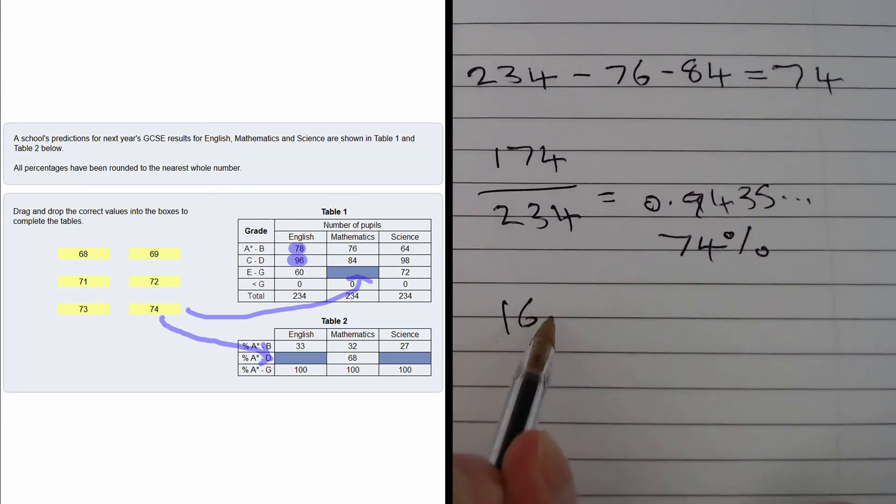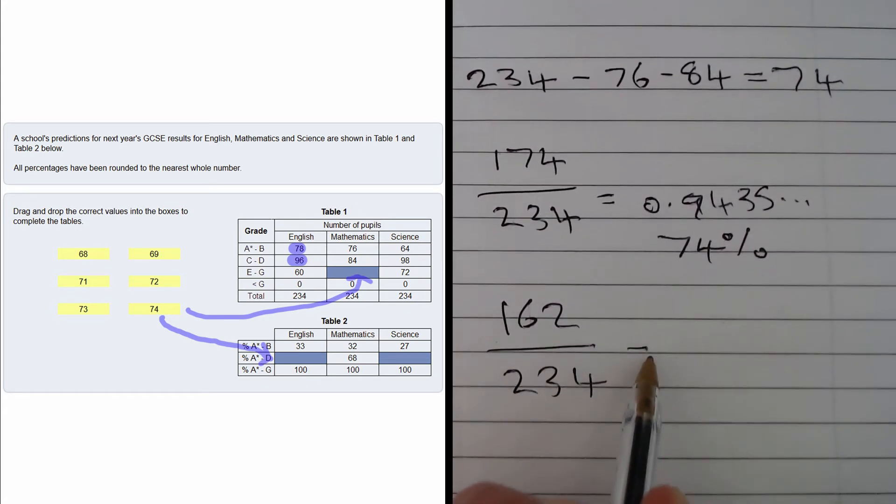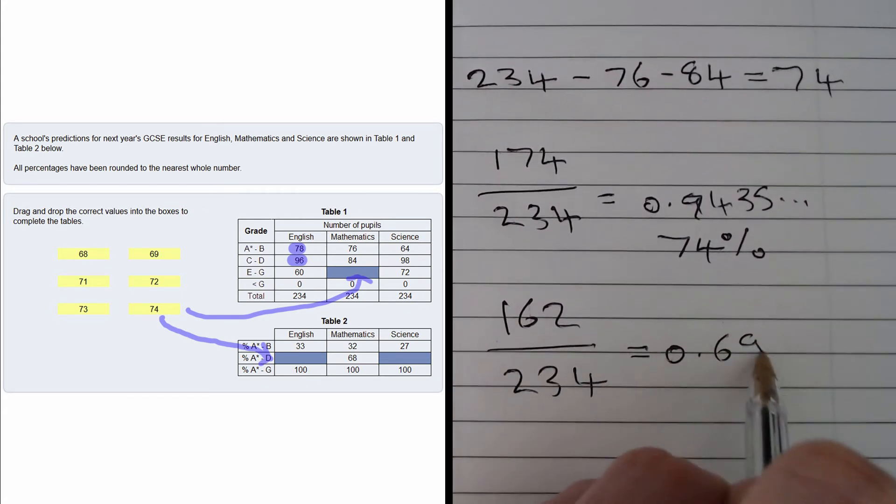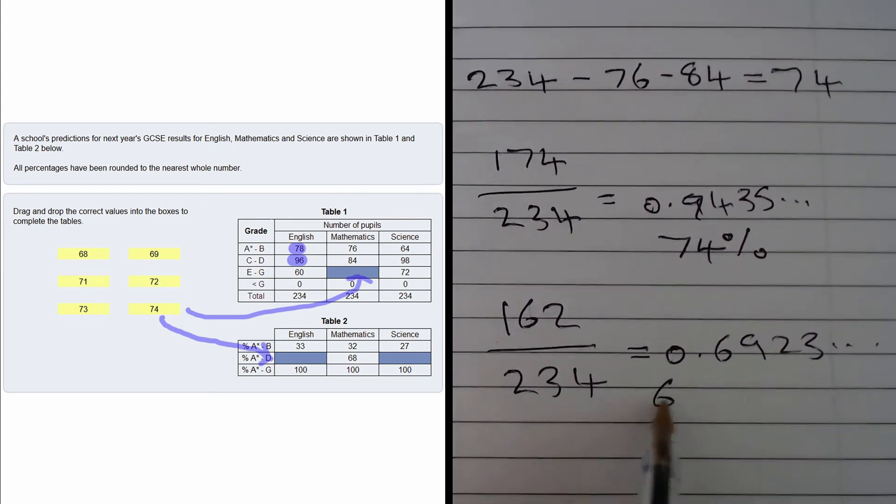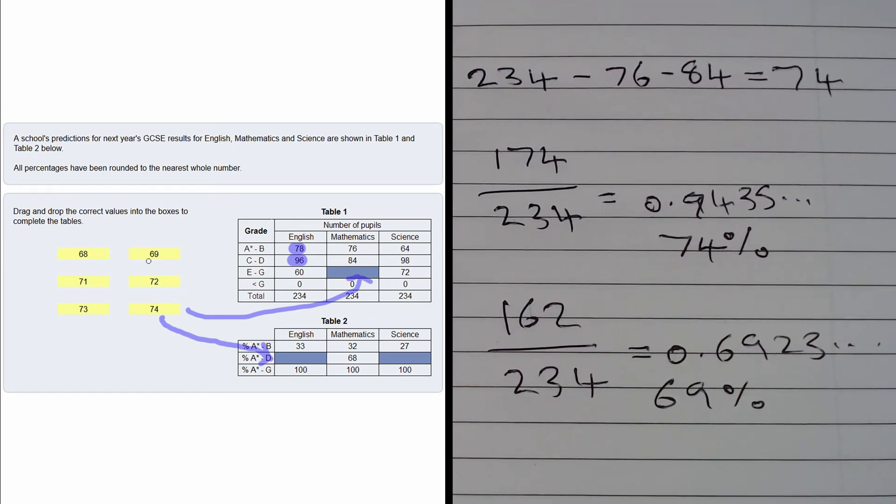That's 162 out of 234. When we calculate this, we get 0.6923..., which is 69%. So this box should be dragged here.